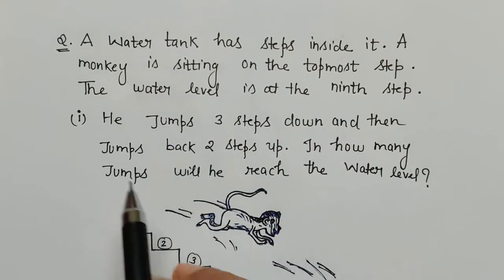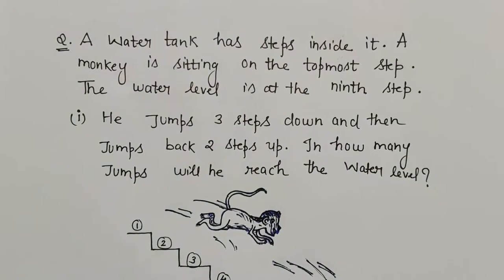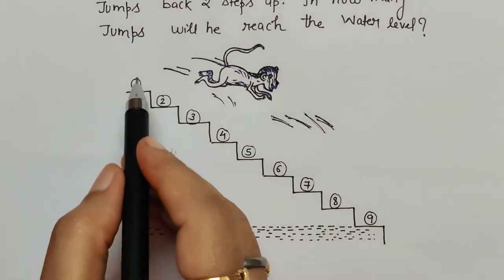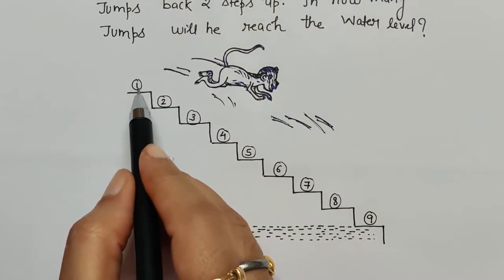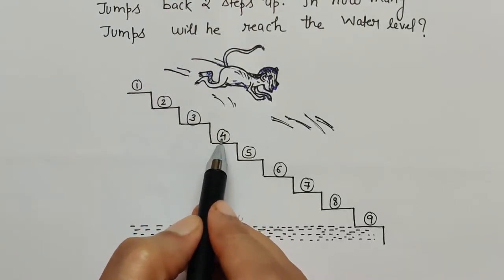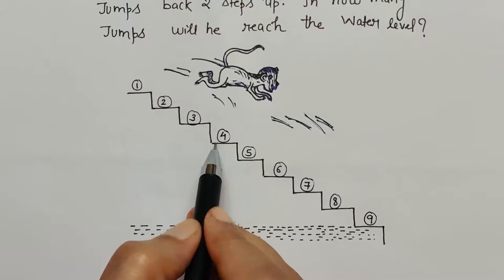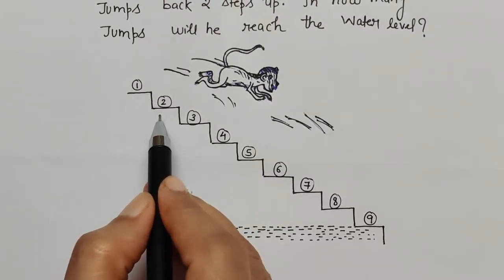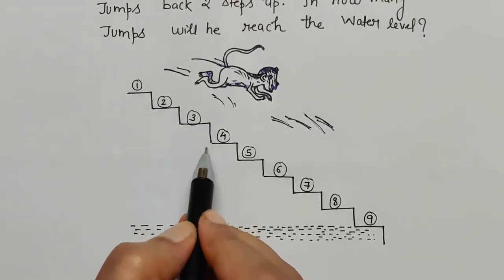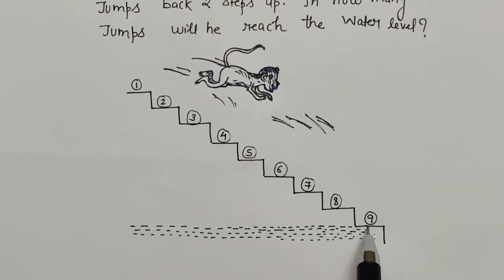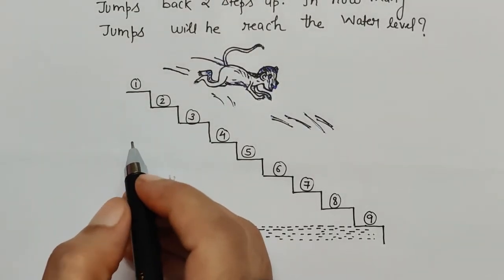Let's understand this with the help of a diagram. Here we can see there is a monkey. As per the question, the monkey jumps three steps downward — one, two, three — and then goes back two steps up — one, two. This downward then upward movement is to be counted: how many times will this downward-upward cycle repeat for the monkey to reach the ninth step?